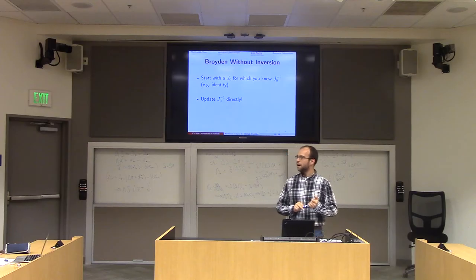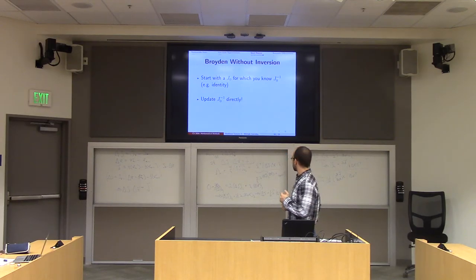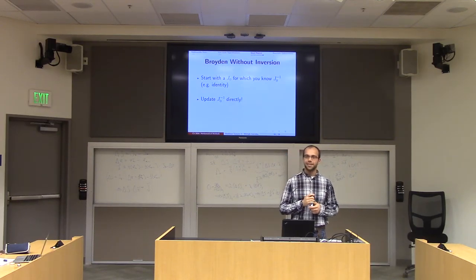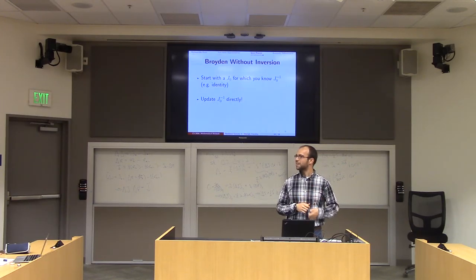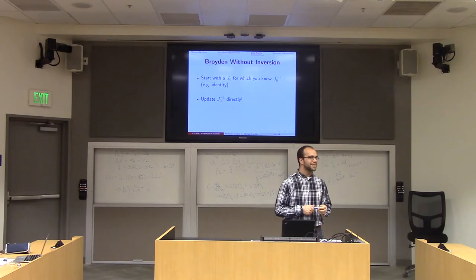Broyden's method is very efficient — all it is is matrix multiplies, additions, and evaluating F. This is surprising and very smart — it's not something I would have thought of.